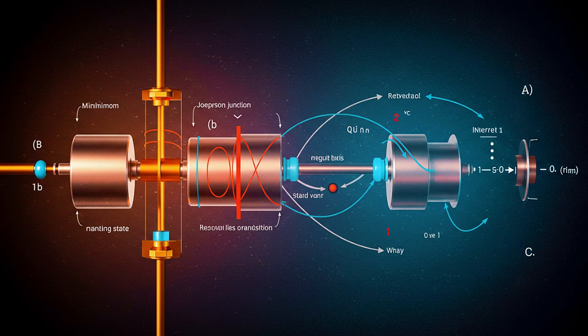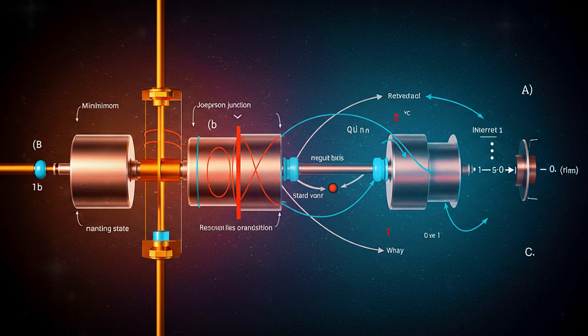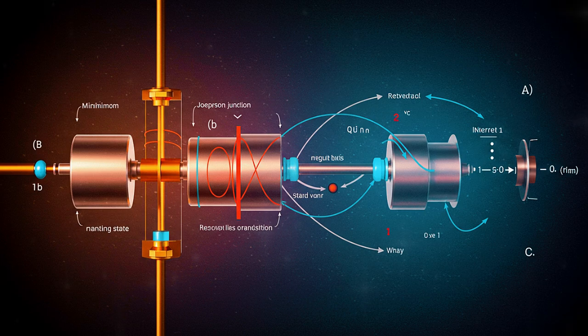An electron manifests as a distribution of probabilities known as a probability cloud. This cloud can assume various configurations based on the electron's energy state. Researchers characterize each configuration using what is known as a wave function.